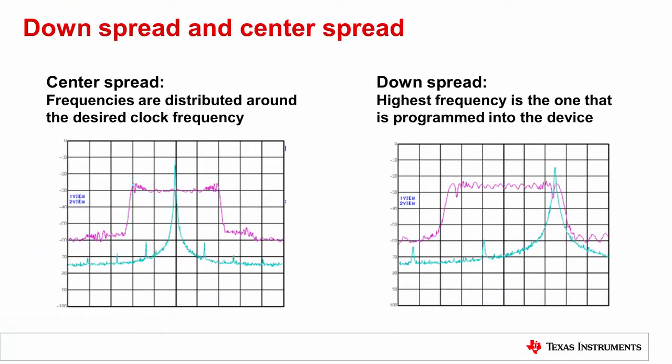One might use down spread rather than center spread when clocking a device with stringent requirements on the input frequency or setup and hold times. For example, if you have a microcontroller that accepts a 100 MHz maximum input frequency, then you could use a 100 MHz clock with down spread SSC.